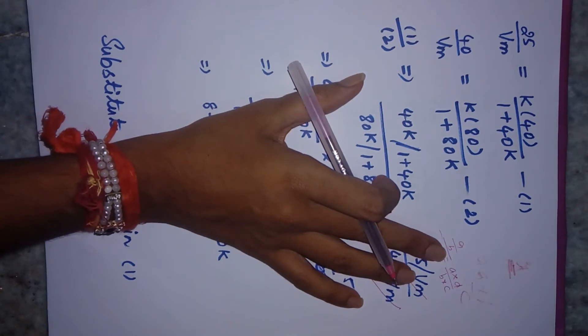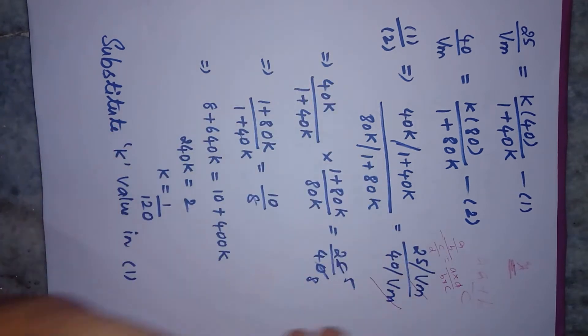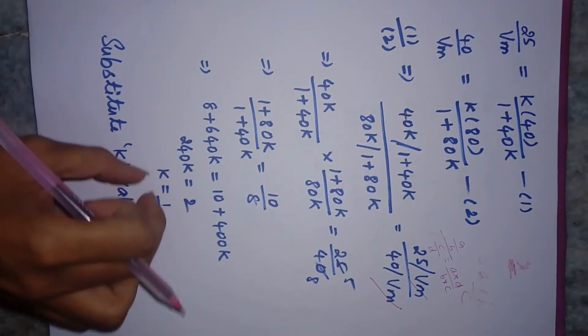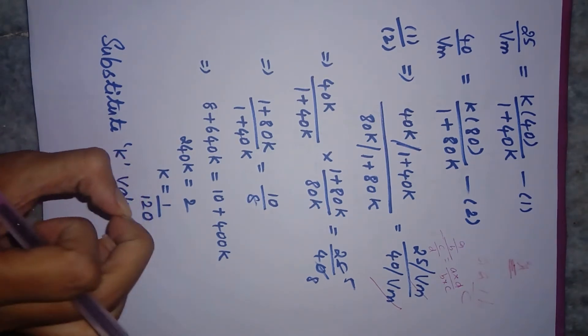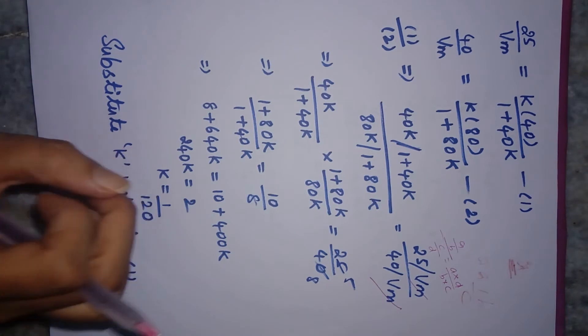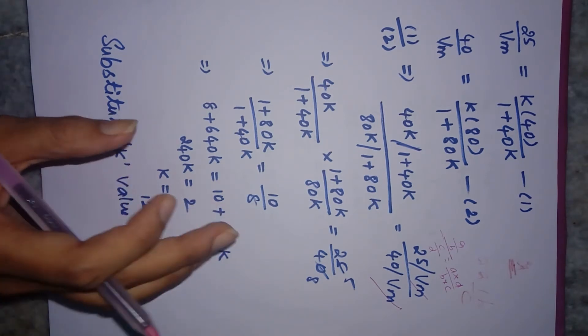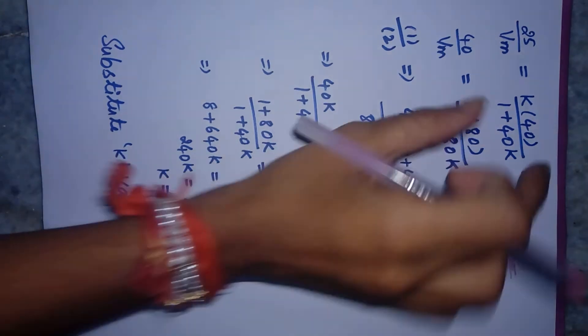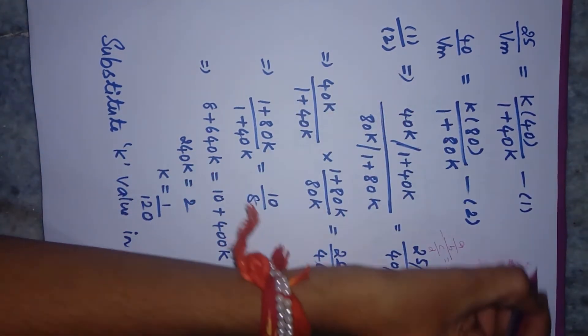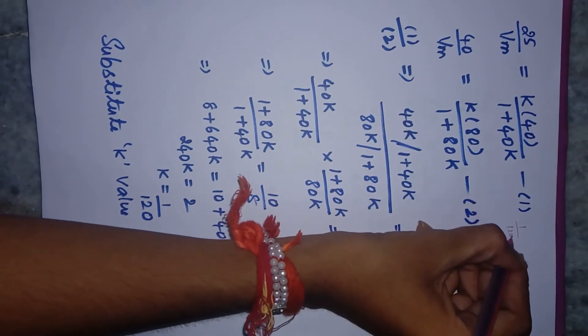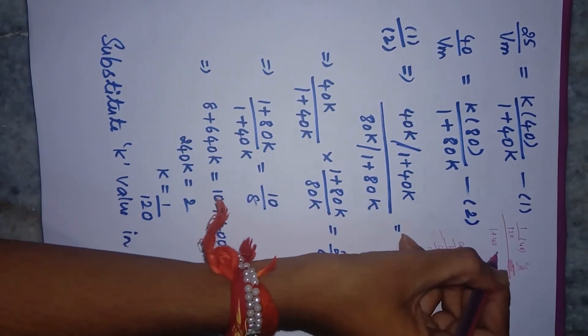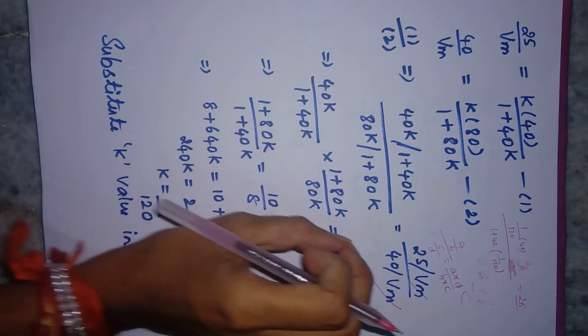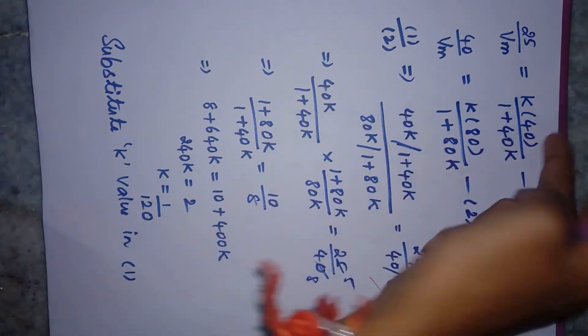Another important point: don't convert K into decimals, which makes calculations complicated. Always try to use integers or fractions for calculations. Never use decimals. If you substitute K = 1/120 directly into 40K/(1+40K), it's still somewhat complicated. Instead, I'll invert the equation to simplify.